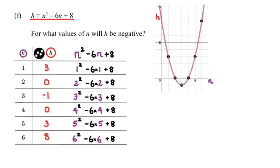What we can see from here is that when n equals 2, h is 0, so that's where this is. And then when n equals 4, h is also 0. So what you can kind of see is that between 2 and 4, the values are negative. If we write this up as the algebraic method, we have h equals n squared minus 6n plus 8.